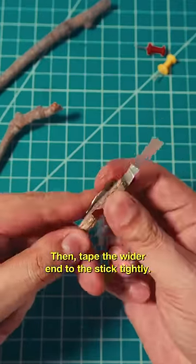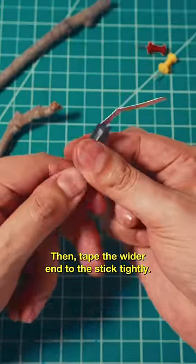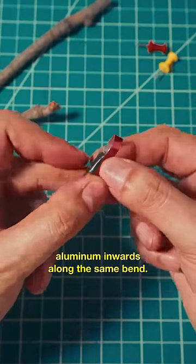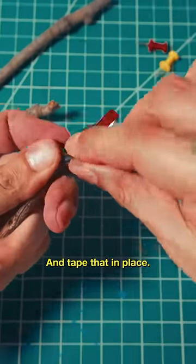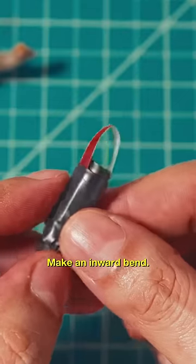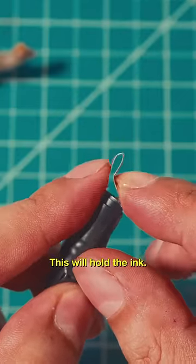Then, tape the wider end to the stick tightly. Fold the aluminum inwards along the same bend and tape that in place. Make an inward bend—this will hold the ink.